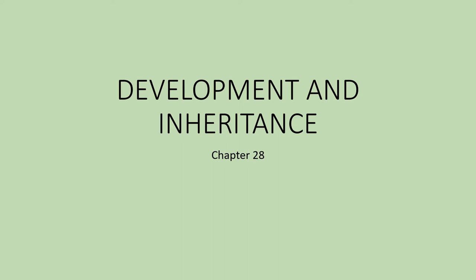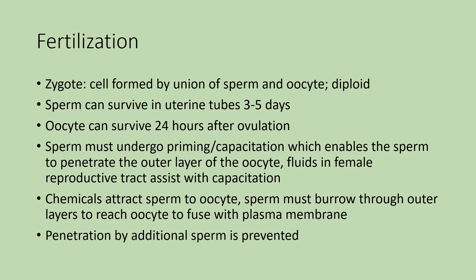This is Chapter 28, which deals with development and inheritance. We will be focusing on the developmental portion of it. Starting with fertilization, the zygote is the cell formed by the union of the sperm and the oocyte. It's a diploid cell. The sperm and oocyte were both haploid, meaning they both have half the number of chromosomes — for humans, that would be 23 chromosomes. Because of this fusion, the zygote becomes diploid, meaning it has two copies, or for humans, 46 chromosomes.